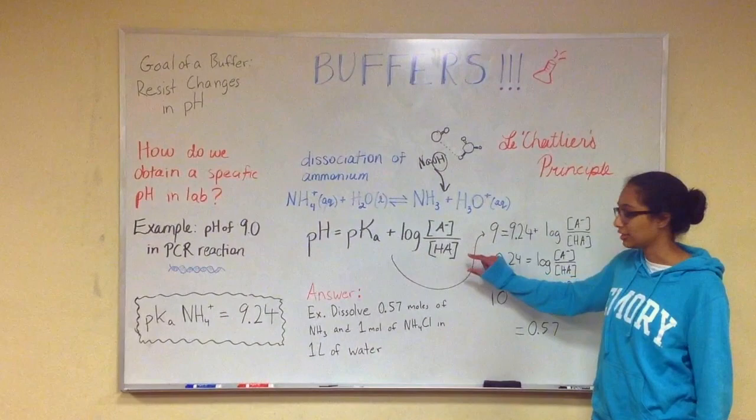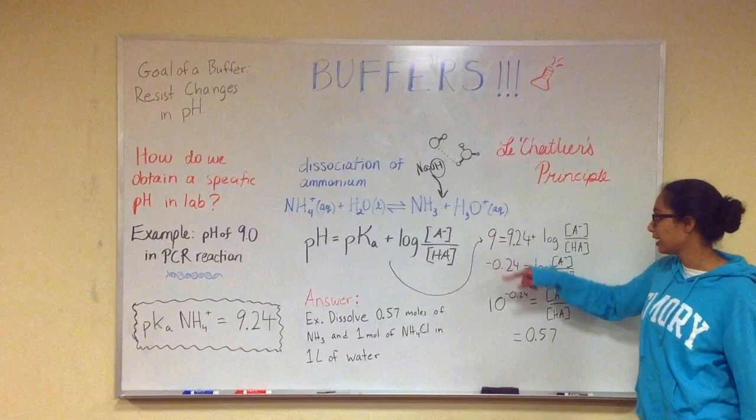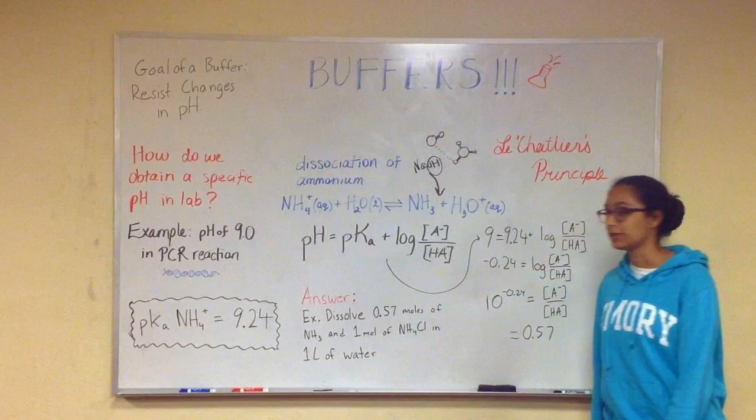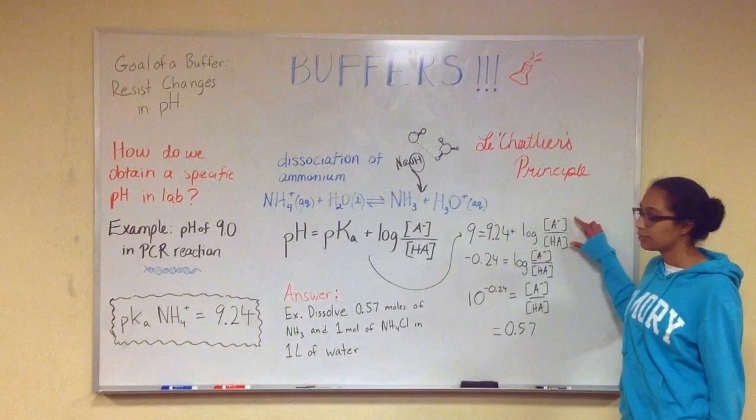So to start, we know that we want a pH of 9, so we're going to put in 9 for pH. And we know that the pKa of ammonium is 9.24. Again, it's a property of the acid. And so we plug this into our equation, and we don't know the concentrations of acid or base yet, but we will figure out how to get there later on.